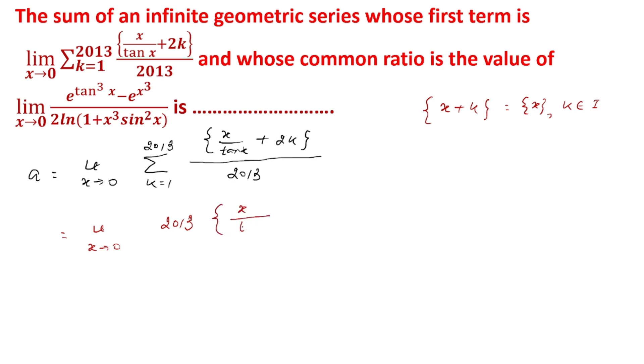This becomes limit x tends to 0 of 2013 times (x/tan x), and x/tan x equals 1. This is the value of the first term of our GP, which is 1. Now for the second limit to solve for r.